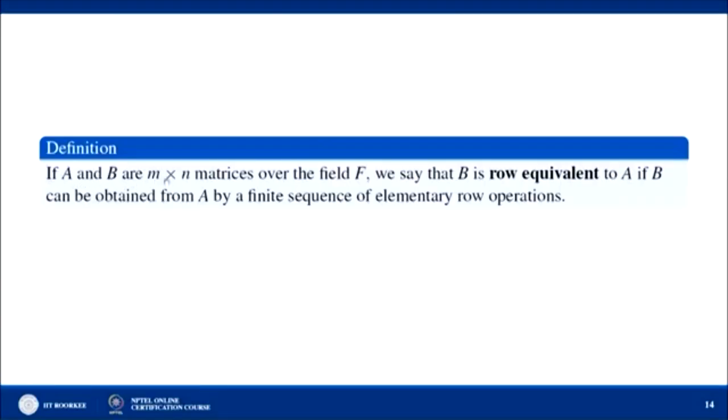If A and B are M×N matrices over field F, we say B is row equivalent to A if B can be obtained from A by a finite sequence of elementary row operations. That is, if you apply some elementary row operations on matrix A and get a new matrix B, then B is row equivalent to A.